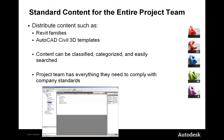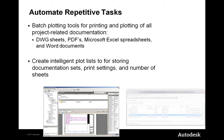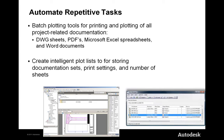Not only can you manage project files in Vault, you can use Vault to access your standard content — if you're in AutoCAD or Revit and go to access standard content, it can come from the Vault server so it's controlled, centralized, and everybody in the office or across multiple offices is working off that same content. There's also automation of repetitive tasks like batch printing and plotting, and batch publishing of DWF files for viewing.